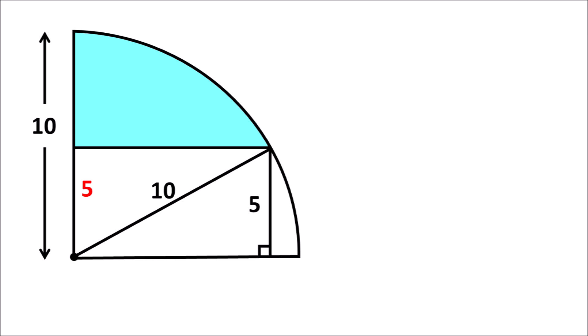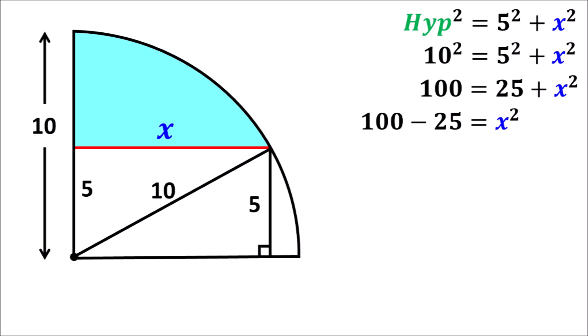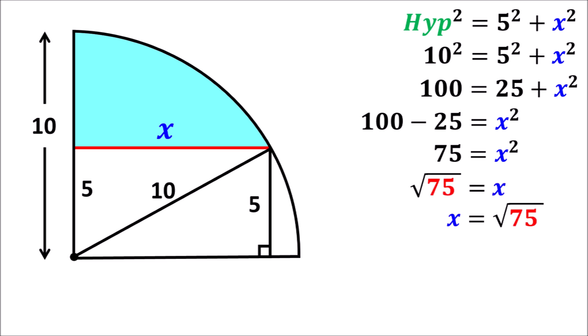We know that this other side of the rectangle has a measurement of 5 units. Let us name the red highlighted side as x. As per the Pythagorean theorem, the hypotenuse square is equal to the sum of the squares of the other two sides. The hypotenuse is equal to 10, so 10 squared equals 5 squared plus x squared. Therefore, 100 minus 25 equals x squared, giving x squared equals 75, and x equals the square root of 75.